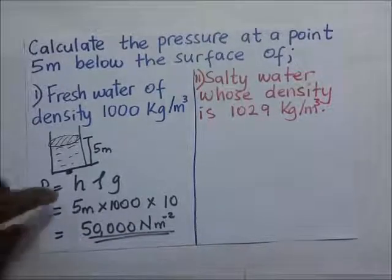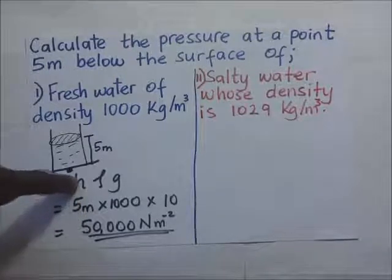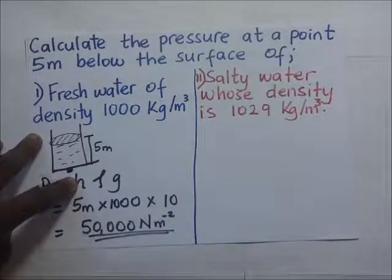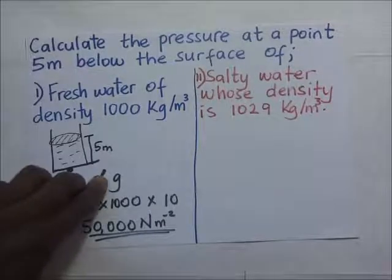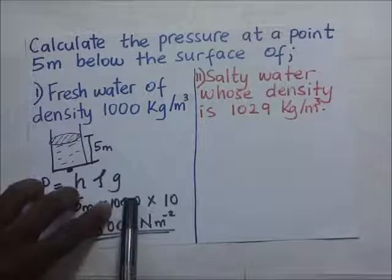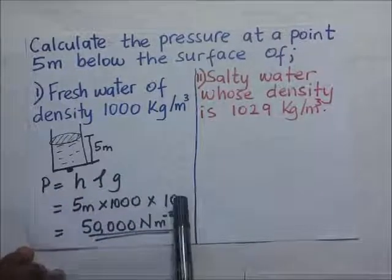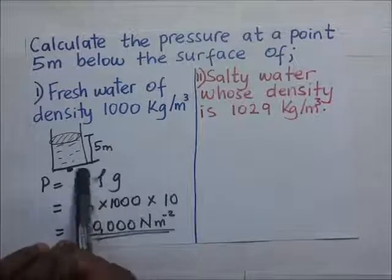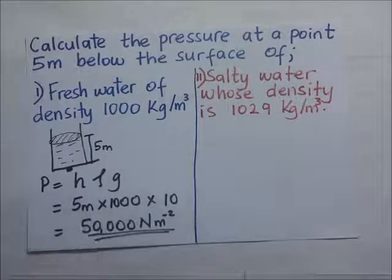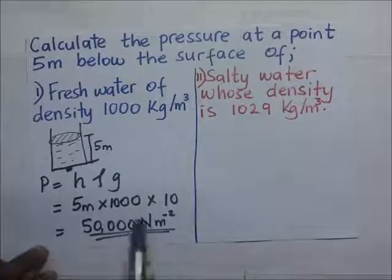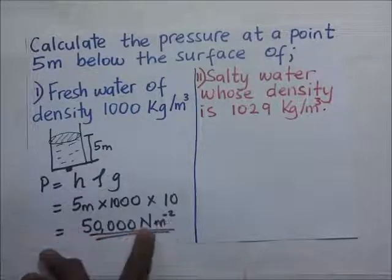Remember, the height must be in meters — if it is given in centimeters or any other units, convert it to meters first. The density must be in kilograms per meter cubed, and gravity is in meters per second squared. If the units are not correct, the final answer will not be in newtons per meter squared but in other units.